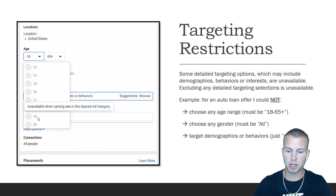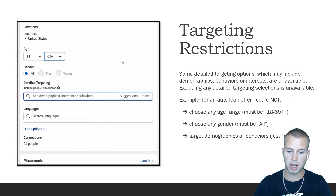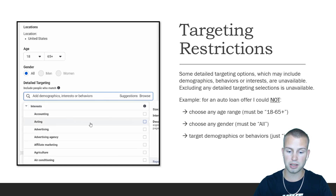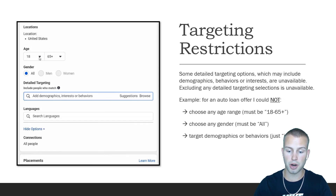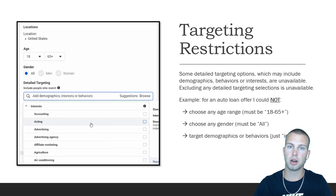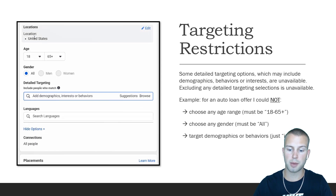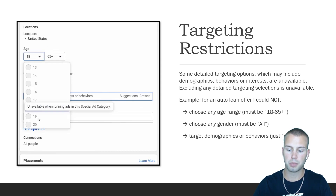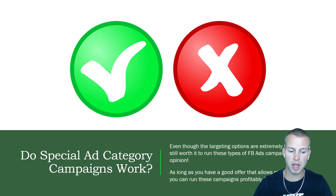You can't use regular lookalike audiences, but you can use Special Ad Category lookalike audiences essentially. Some detailed targeting options — which may include demographics, behaviors, or interests — are unavailable. Excluding any detailed targeting sections is unavailable as well. For example, for an auto loan I could not choose any age range because it must be set to 18 to 65, I could not choose any gender — it must be left on all — and I could not target demographics or behaviors. I can only use interest targeting, and even the interest targeting is limited. That's kind of a bummer with the special ad category because I love being able to target certain demographics, behaviors, and age ranges.